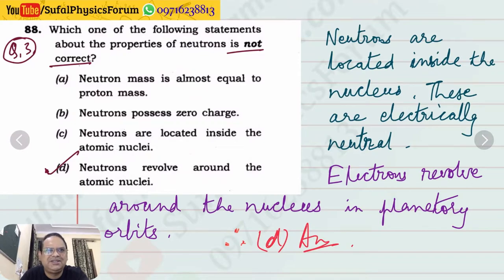Question number 3: Which one of the following statements about the properties of neutrons is not correct? Neutron mass is almost equal to proton mass - this is correct. Neutrons possess zero charge - of course, they are electrically neutral. Neutrons are located inside the atomic nuclei - this is also true. Neutrons revolve around the nuclei - this is absolutely wrong because neutrons are located inside the nucleus. Rather, electrons revolve around the nucleus in planetary orbits. Option number D is correct.